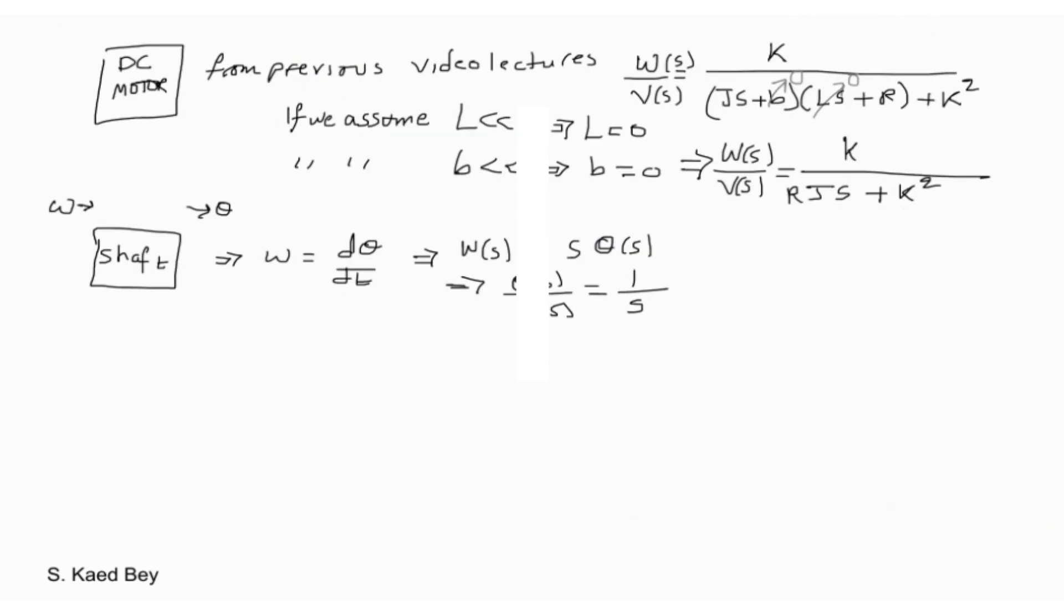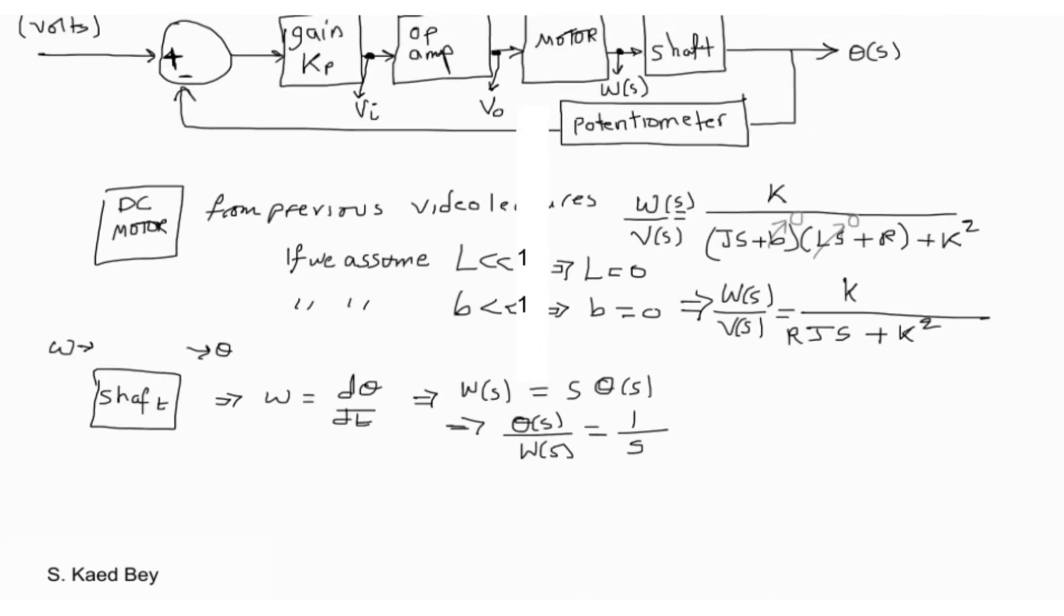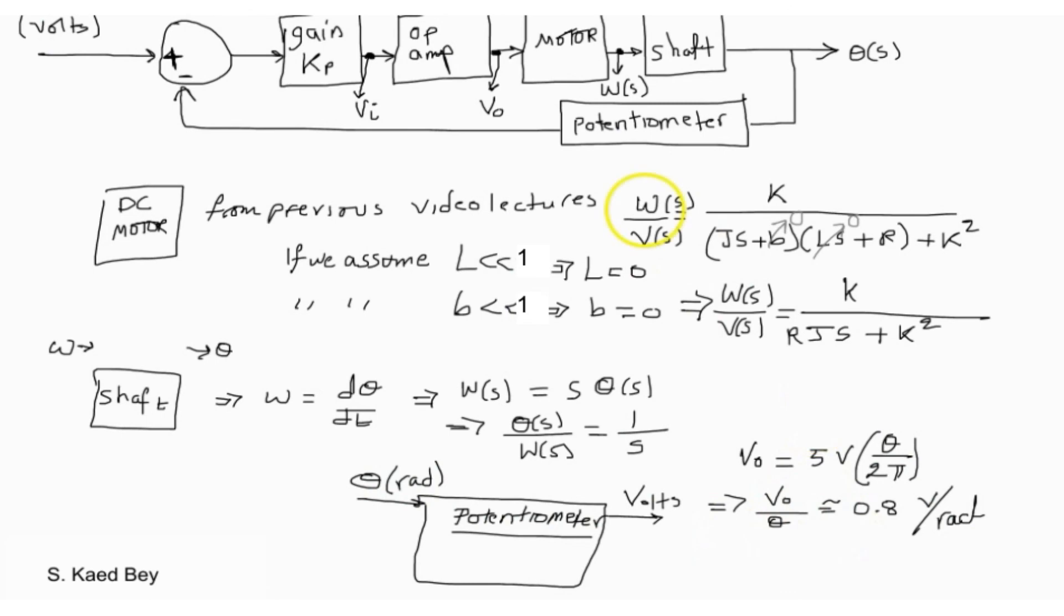For the potentiometer in the feedback loop, if we assume it has a range of two turns and zero degrees is in the center of motion - one turn in the negative direction and one full turn in the positive direction - we can express the output voltage in terms of the shaft position using the following relation. This assumes that the supply for the potentiometer is 5 volts.